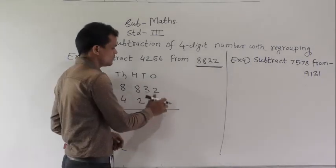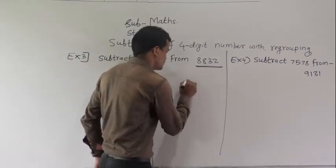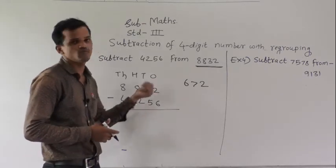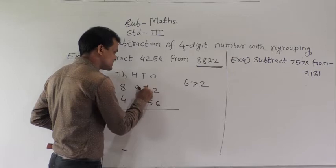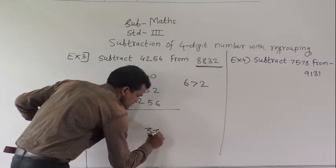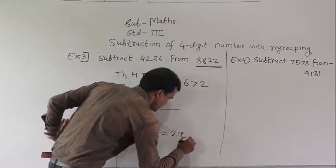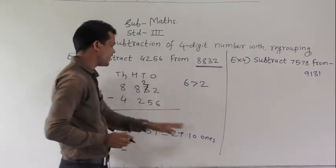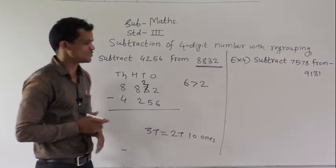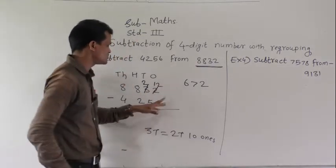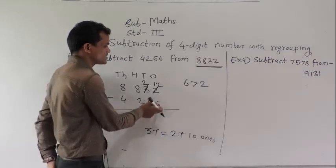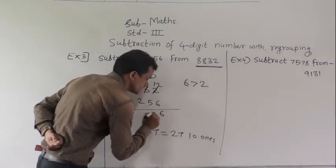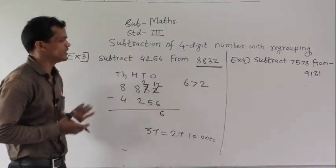In the ones place column, 2 minus 6 — 6 is greater than 2, so we can't subtract 6 from 2. Regroup this 3 tens into 2 tens and 10 ones. Write these 2 tens here and add 10 ones to 2 ones, so 10 plus 2 equals 12. We can subtract 6 from 12: 12 minus 6 equals 6. Write 6 under the ones column.